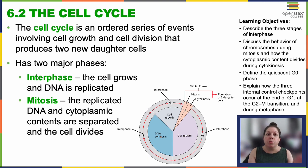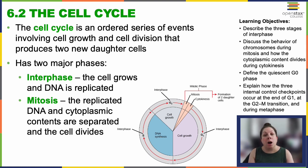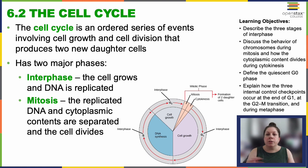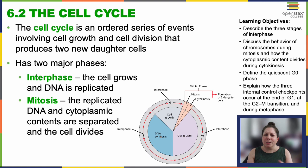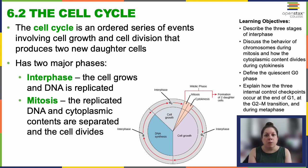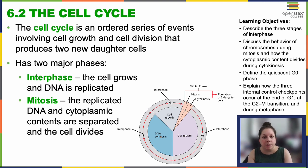There are two primary phases. We have interphase, where growth and DNA duplication occur. And then the mitotic phase, where DNA is replicated and cell contents segregate, leading to cell division. Typically following mitosis, cytokinesis will occur, dividing the cytoplasm and yielding two daughter cells. There are some instances where the cell cycle will arrest and hold, waiting for conditions to be met, and we'll talk about a couple examples of that later.